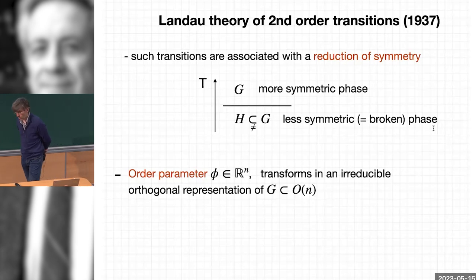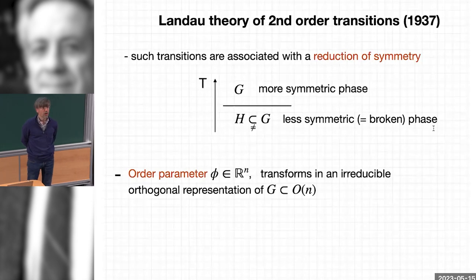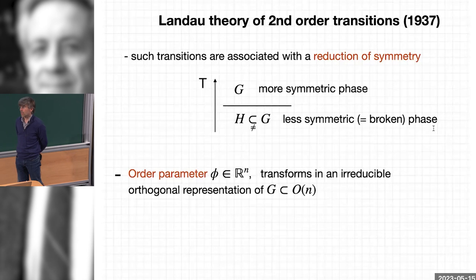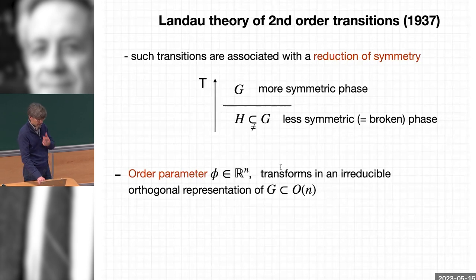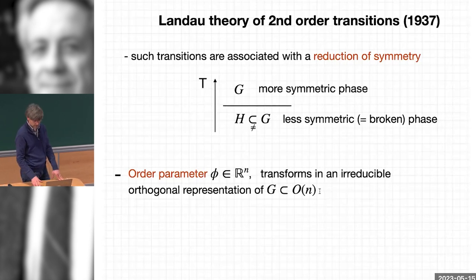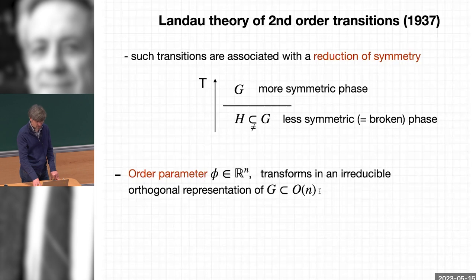What do those groups act on? Landau introduced the concept of the order parameter. The order parameter is a vector φ — an n-dimensional vector — and this n-dimensional space carries an irreducible representation of the more symmetric group G. It's an orthogonal representation, so the group G becomes a subgroup of O(n). This is the basic setting, and you can see the appearance of groups here. Louis Michel was the master of group theory, so clearly this is something he could play with, as we will see.